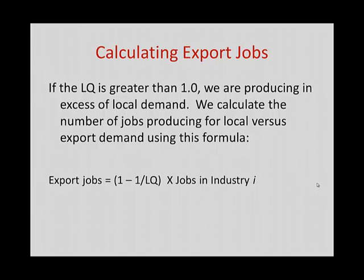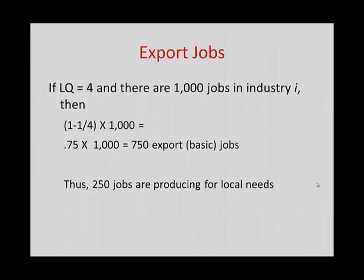The formula is: export jobs = (1 − 1/LQ) × employment in industry I. For example, if our location quotient is 4 and there are 1,000 jobs in industry I — say a manufacturing firm — then (1 − 1/4) × 1,000 = 0.75 × 1,000 = 750 jobs producing for export demand, meaning 750 are basic jobs. Under the assumption approach, we would have assumed all 1,000 jobs were basic. Under this method, we sort out the 250 jobs producing for local demand, and 750 jobs are producing for export demand.